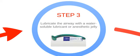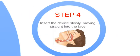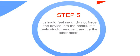Step 3 is to lubricate the airway with a water-soluble lubricant or anesthetic jelly. Step 4: insert the device slowly, moving straight into the face, not towards the brain. Step 5: ensure that the device is snug without being forced or stuck. If it feels stuck, remove it and try the other nostril or a smaller NPA.